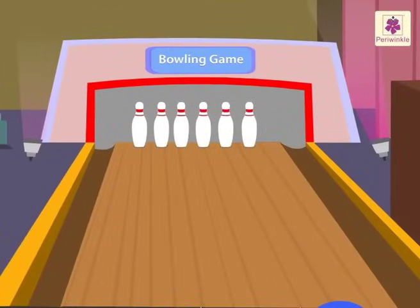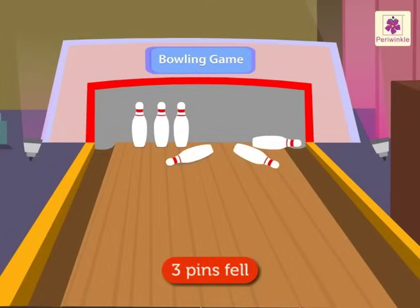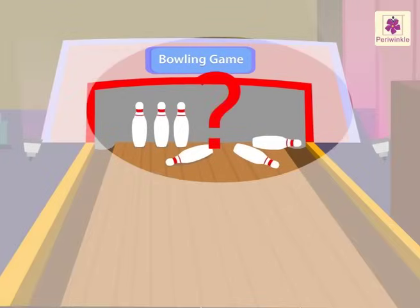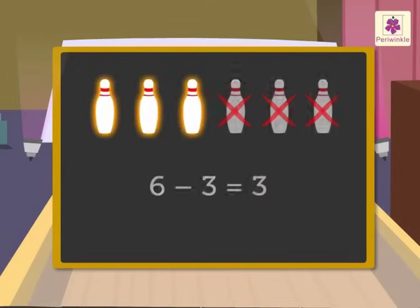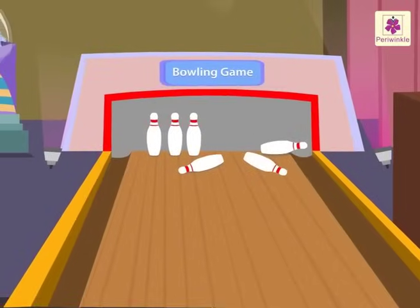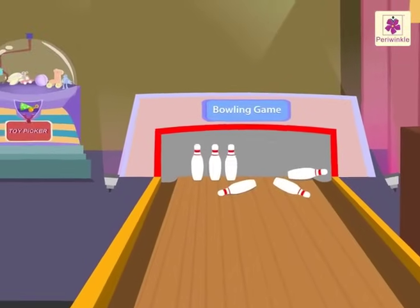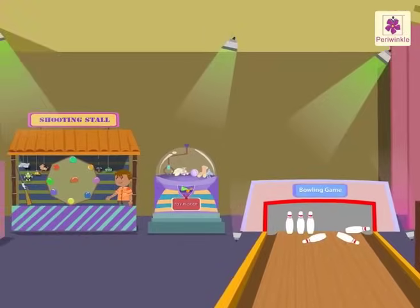Now let's play bowling! There are six bowling pins. Let's throw the ball — look, three pins fell down. How many pins are left on the floor? Six minus three is equal to three. Three pins are left on the floor. Wasn't it fun learning about subtraction at the game zone with different games? Have fun!